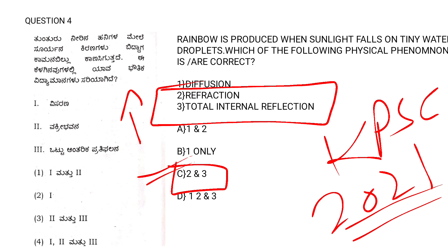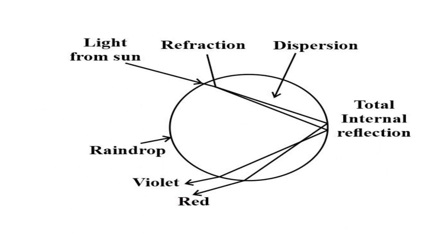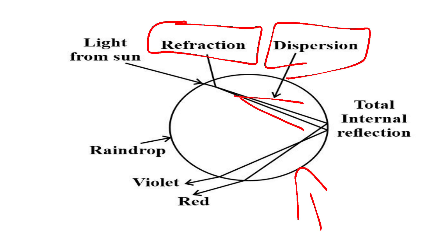See, this is a water droplet. The light from the sun enters the water droplet. At first it gets refracted, refraction phenomenon happens. Then you can see there is a dispersion. This is called dispersion, that is split of the sunlight. Dispersion happens, then the total internal reflection happens.